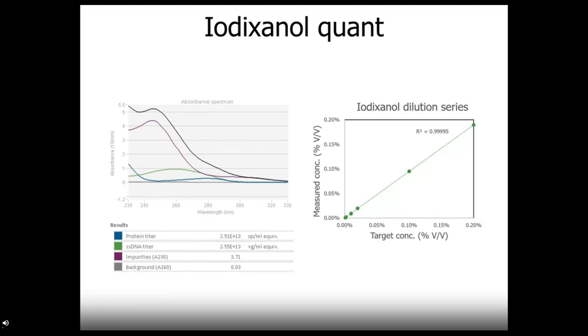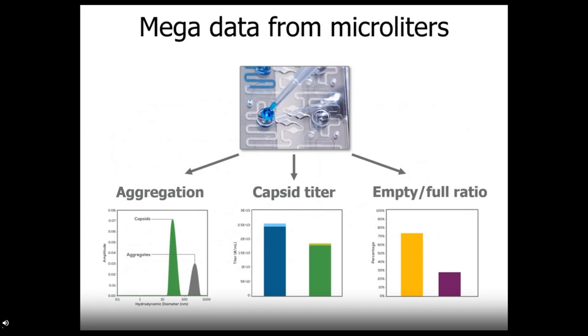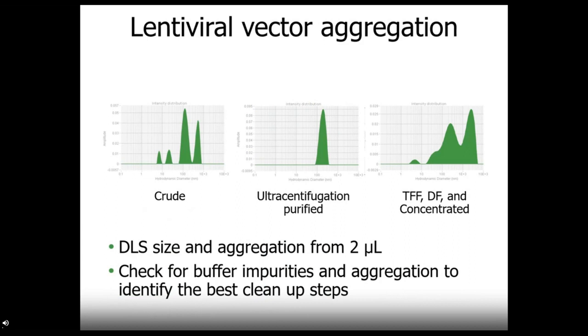And if iodixanol is part of your process, it is useful to know exactly how much is in your sample and to check on the iodixanol concentration after each buffer exchange. Stunner can help out here as well and will detect iodixanol in your sample as low as 0.0005% by volume. So from only two microliters, Stunner combines UVVIS, DLS, and SLS data to tell the whole story about your AAV sample, delivering mountains of data about sample aggregation, AAV full and empty capsid titer, and empty full ratios.